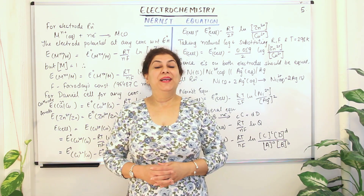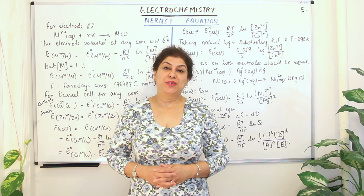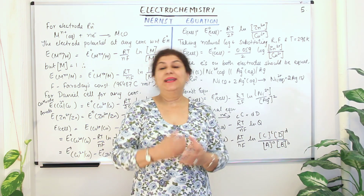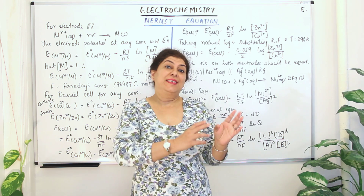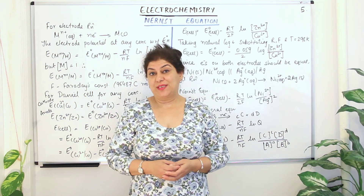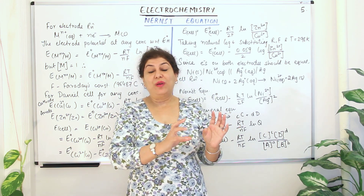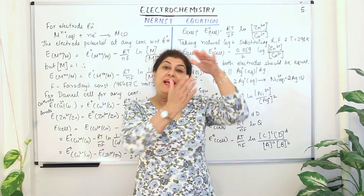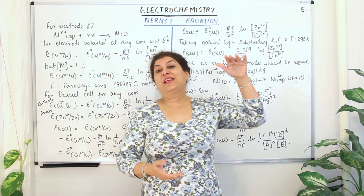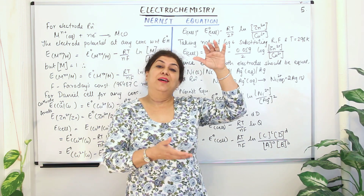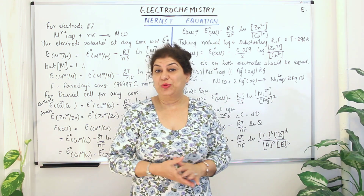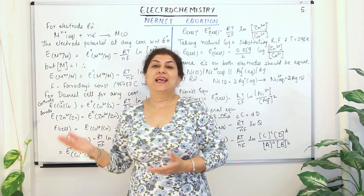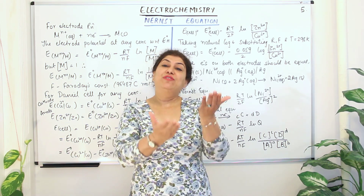Hello, I am Seema and welcome to part 5 of the chapter electrochemistry. In the previous parts we talked about the electrode potential and how we can calculate the standard electrode potential with the help of the standard hydrogen electrode. Under standard conditions, with a one molar solution for every substance, we calculated its standard electrode potential. This table of electrode potentials gives us an idea to theoretically know which would act as a cathode or which would act as an anode if you have two of those substances.